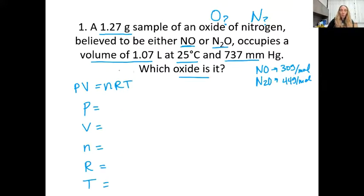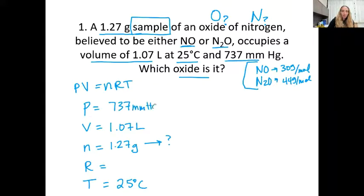And one thing to double check while you're doing this problem - every single one of these values has to do with that same sample. So you want to pay attention to those labels too, because sometimes in other problems you might have two different samples going. So just make sure that everything that you write down applies for this one sample. So this sample weighs 1.27 grams. I can write that, but I can't calculate the number of moles here because I don't know what that sample is. If I knew the sample, I could convert it to moles. I know it's either these two things. And it occupies a volume of 1.07 liters. Notice I'm writing my numbers with my labels at 25 degrees Celsius and 737 millimeters of mercury.